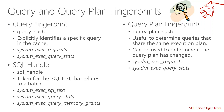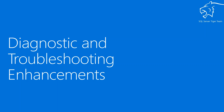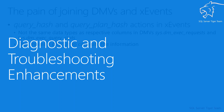You can use query plan hash with sys.dm_exec_requests and sys.dm_exec_query_stats. And finally, there's the notion of plan handle — a token given at compile time for a cached execution plan. You can use this with the DMV shown on screen. Now that we've covered these fundamentals, let's look at some of the diagnostic and troubleshooting enhancements we've been doing.